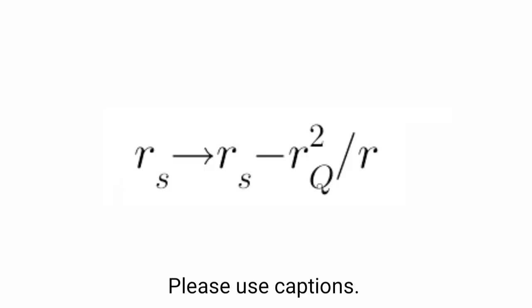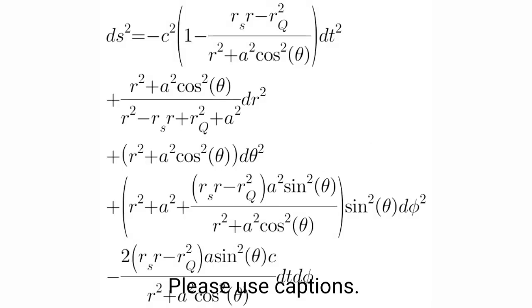So the answer is, adding Reissner-Nordström transformation, we finally get the Kerr-Newman metric.